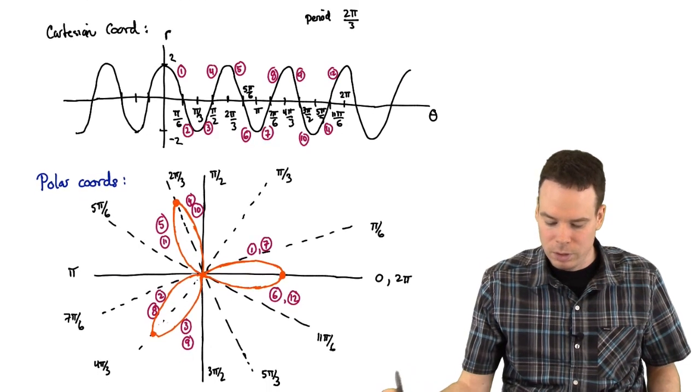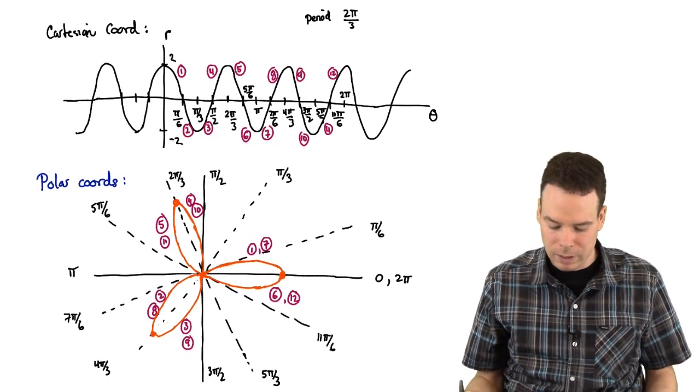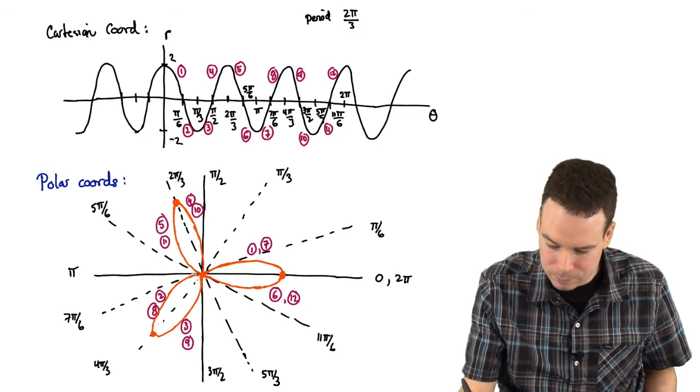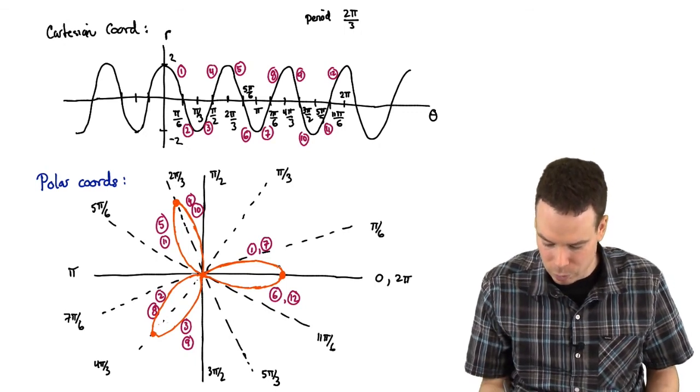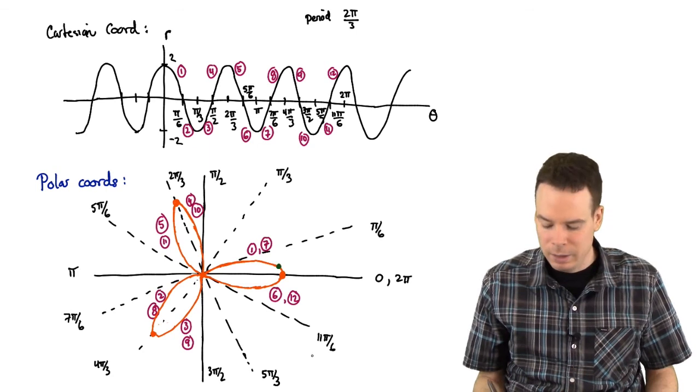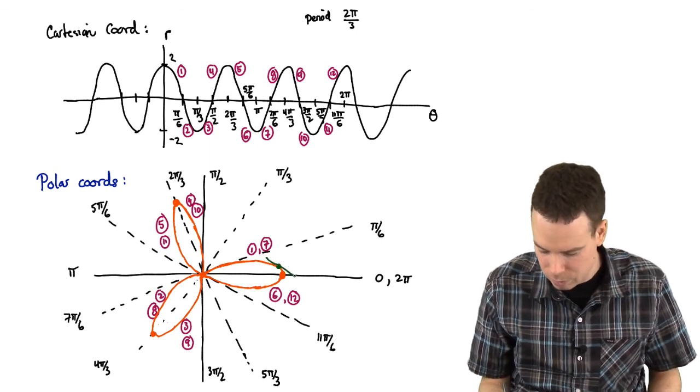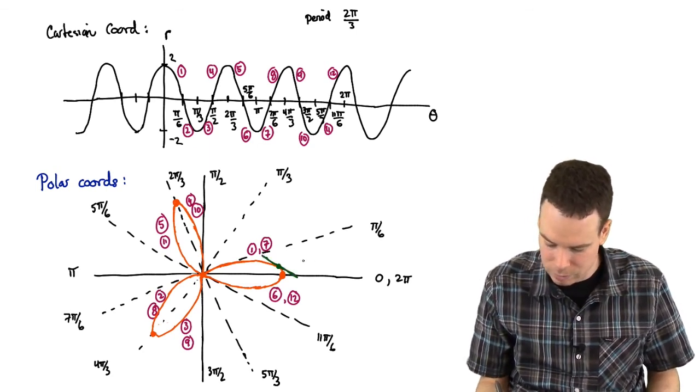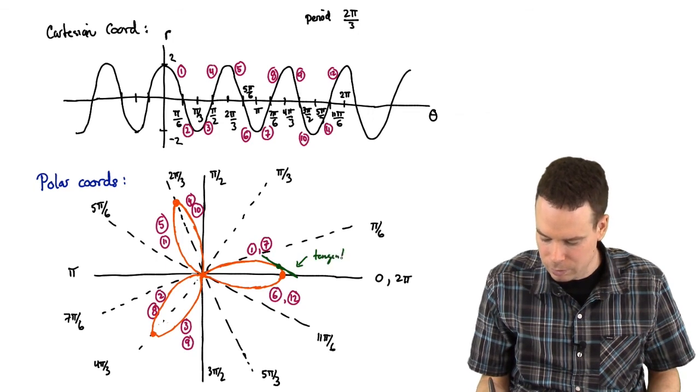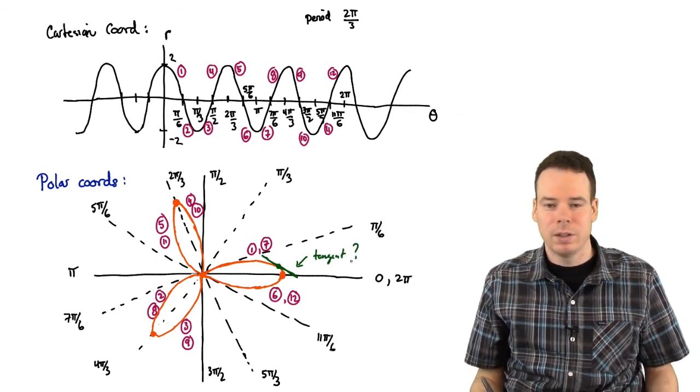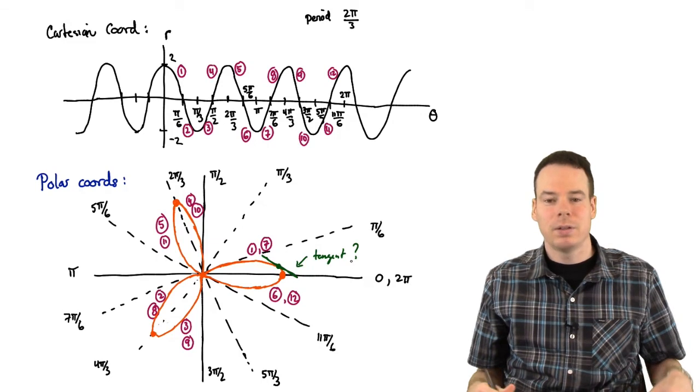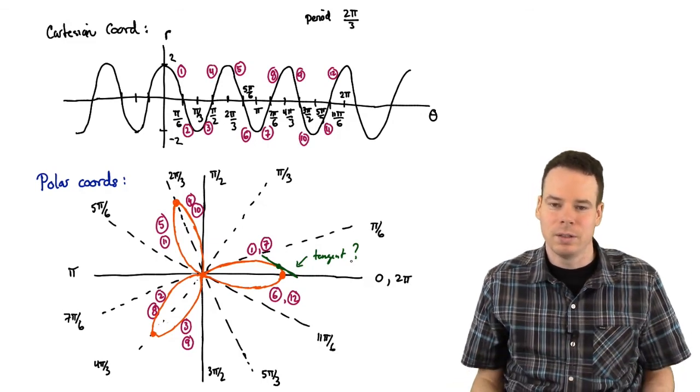Now, the next thing we want to do is we want to bring calculus into the mix. So, for example, I pick a point on the curve. I don't know, maybe a point somewhere over here. And I ask the question, what's the tangent line at that point? What's the tangent line? Can we find the equation of the tangent line? So, now we're going to start to do calculus on these polar curves.